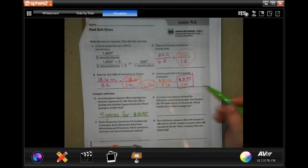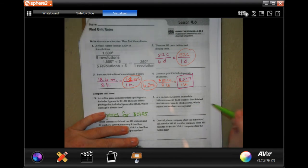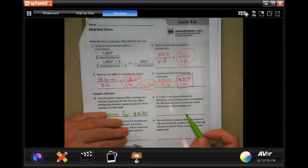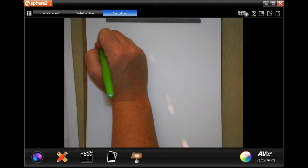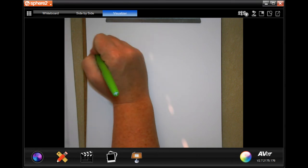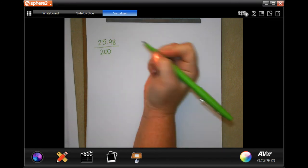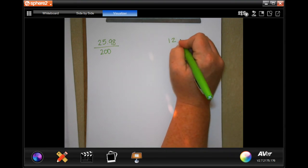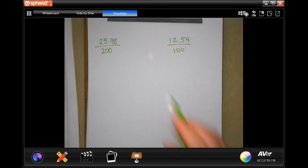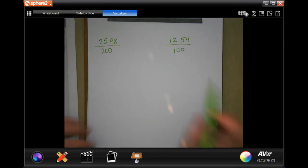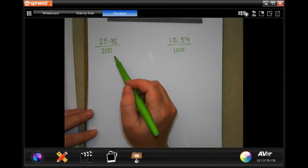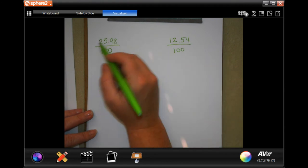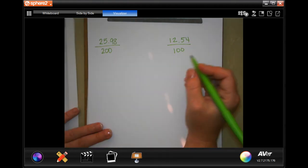At a track meet, Samma finishes the 200 meter race in 25.98 seconds. Tom finishes the 100 meter race in 12.54 seconds. Which runner ran at a faster average pace? So again, going to have to divide. We have 25.98 for the 200 meter and we have 12.54 for the 100 meter. Now, here's the thing that's going to be really cool about this one. To get from 200 to 100, or from 100 to 200, I just have to multiply by 2. So I'm going to multiply this by 2 and then see what I get. So then I don't have to divide. Dividing is hard compared to multiplying.